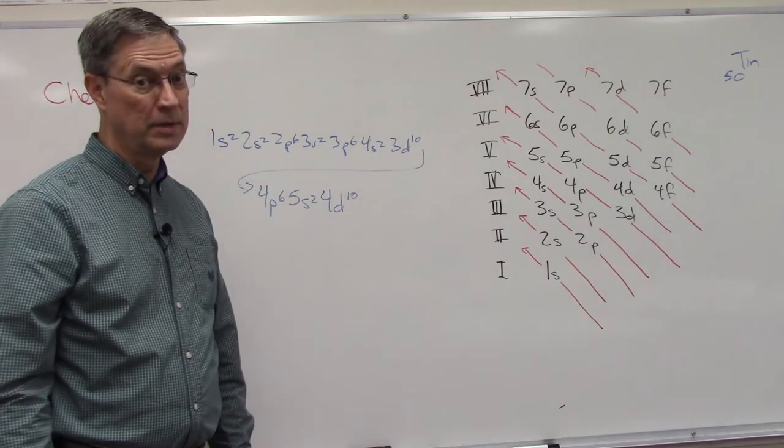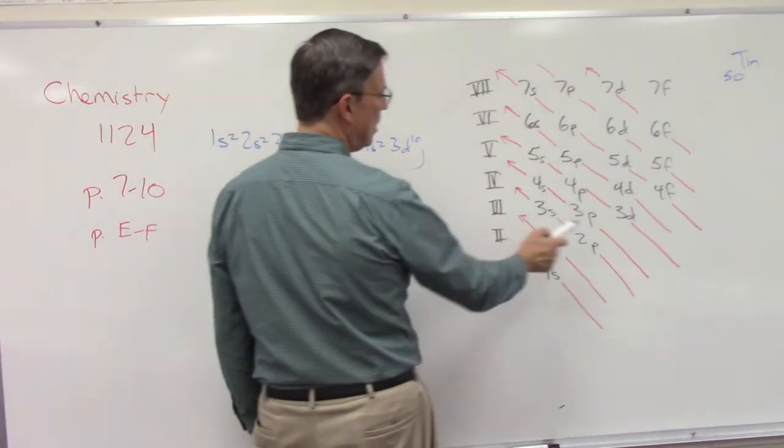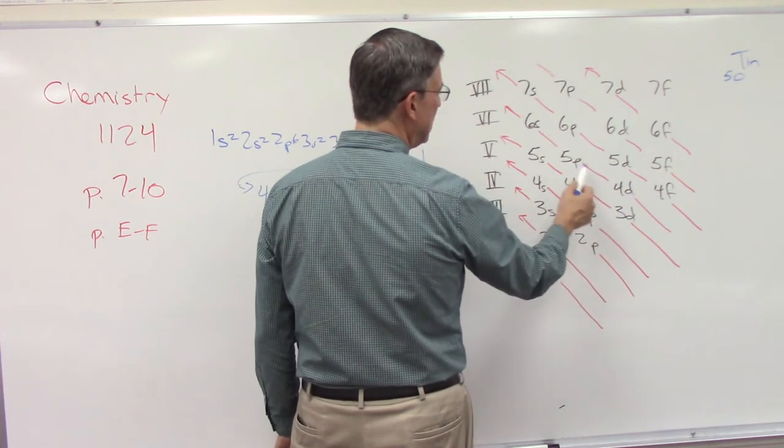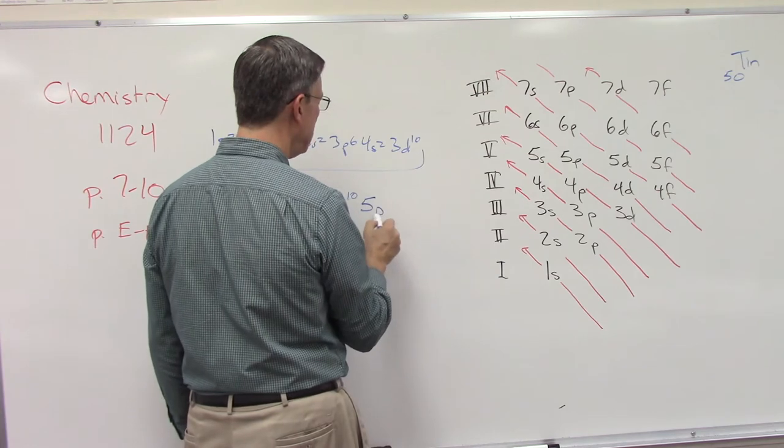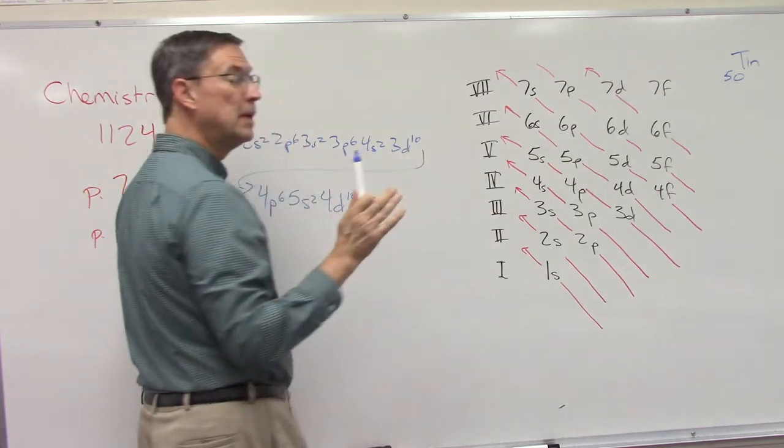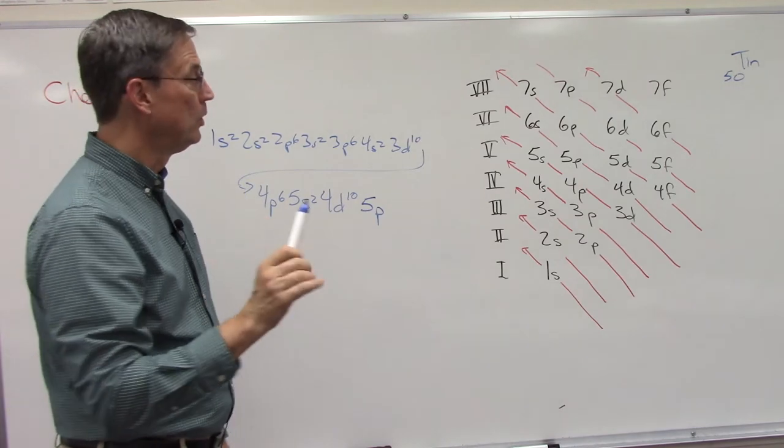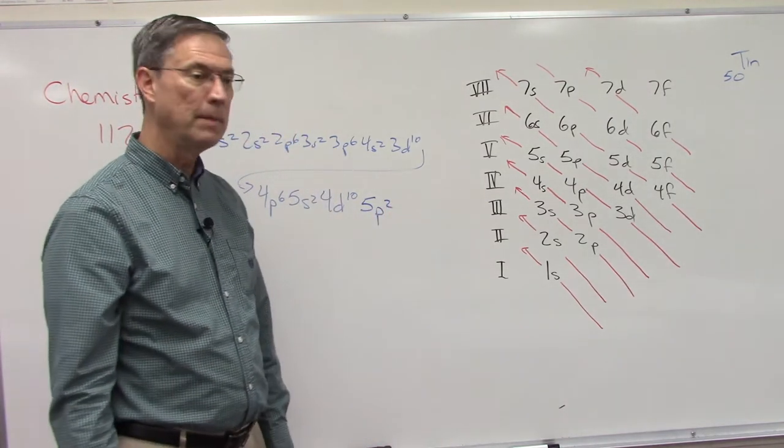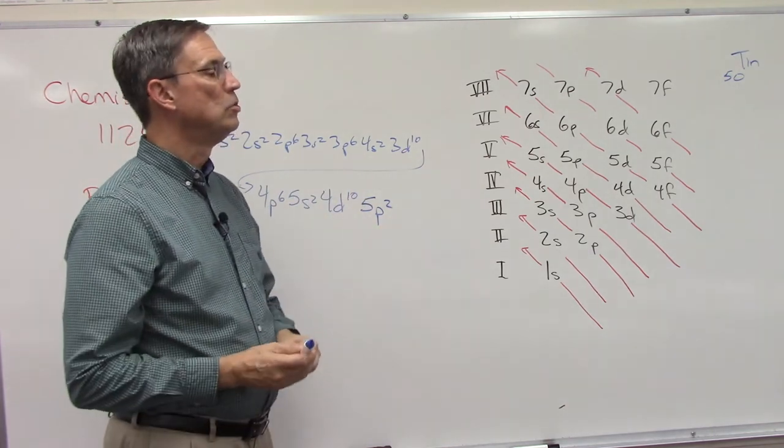So where do those two electrons go? Well I filled 4d, so the next electrons are going to go into 5p. But even though p can hold 6, I'm not putting six in there. I'm only putting two, because now if you add up all of the electrons you are at 50.